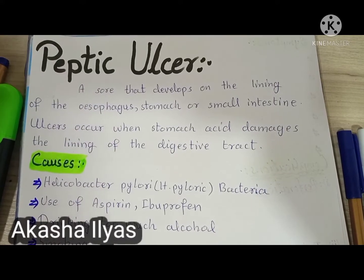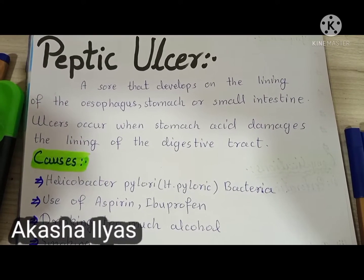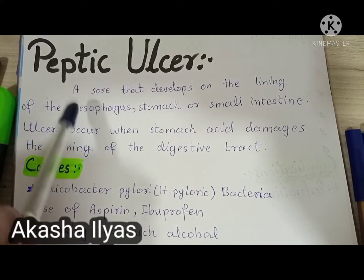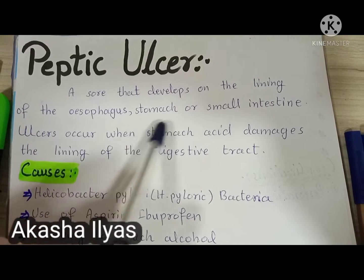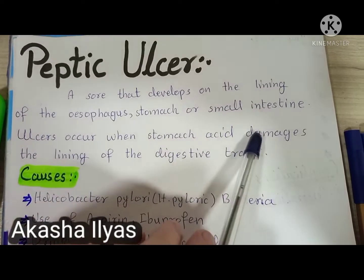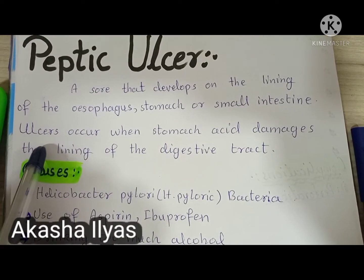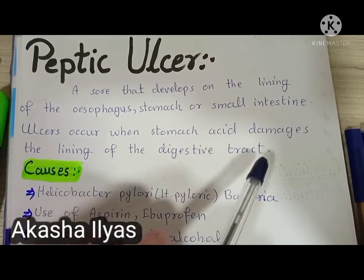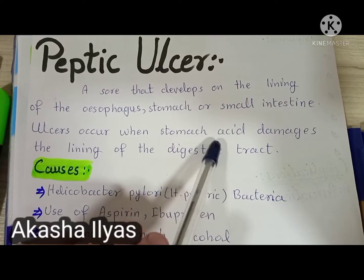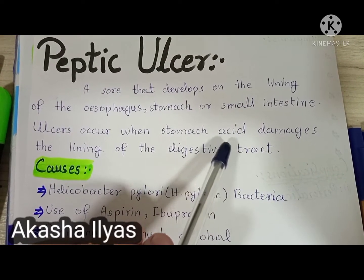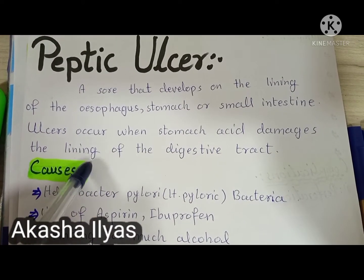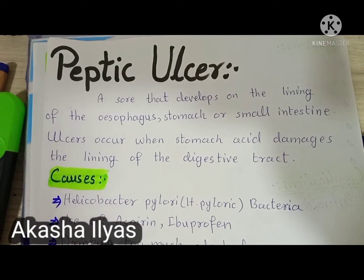Welcome, my name is Akash. Today we will discuss peptic ulcers. A peptic ulcer is a sore that develops on the lining of the esophagus, stomach, or small intestine. Ulcers occur when stomach acid, specifically HCl present inside the stomach, damages the lining of the digestive tract and starts eating the wall of the stomach.